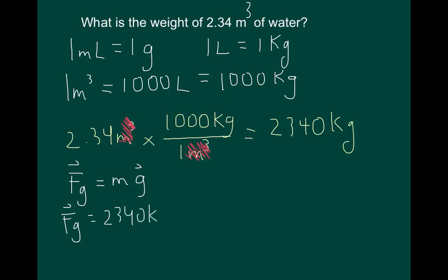So we have 2,340 kilograms, multiplied by Earth's gravitational constant, 9.8 meters per second squared, or you can be using 9.8 newtons per kilogram.